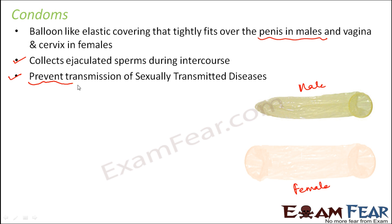Condoms also prevent transmission of sexually transmitted diseases. Even when the penis is inserted inside the vagina, the penis is not coming in direct contact with the vagina because it has got the covering. Whether the penis has the covering or the vagina has the covering, there is a barrier between the penis and the vagina, so the two persons are actually not coming in sexual contact with each other. That way it prevents the transmission of sexually transmitted diseases. That is why the use of condoms has become very common — because it serves two purposes: one is contraception, and the other is prevention of sexually transmitted diseases.